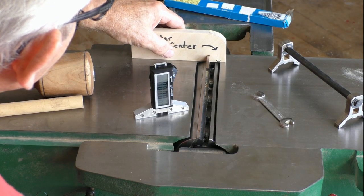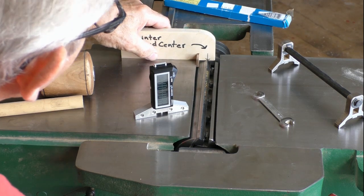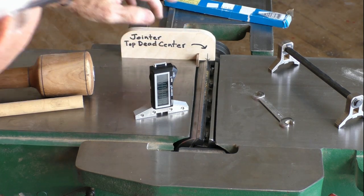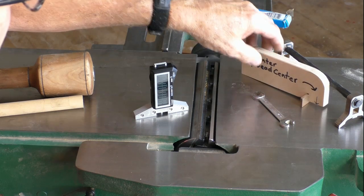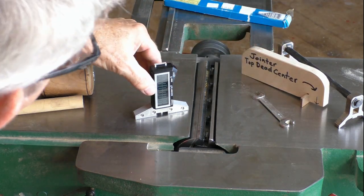Using PlaneCheck while setting joiner knives follows much the same procedure. After adjusting the infeed table so it's co-planar with the outfeed table, rotate the knife to top dead center.